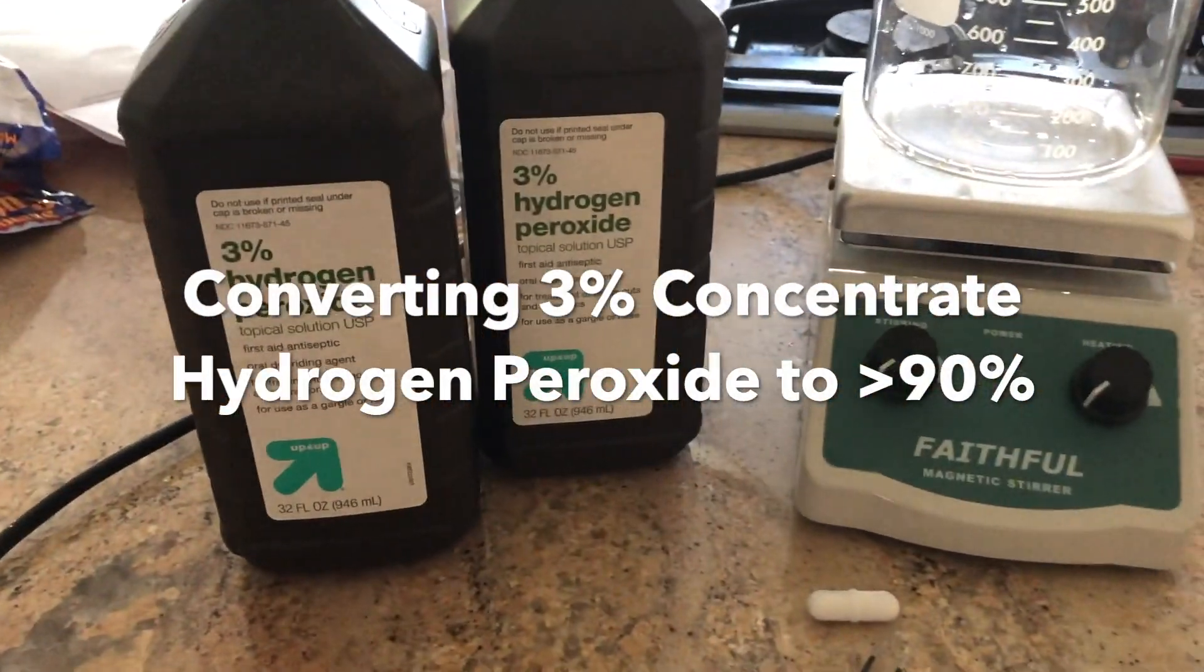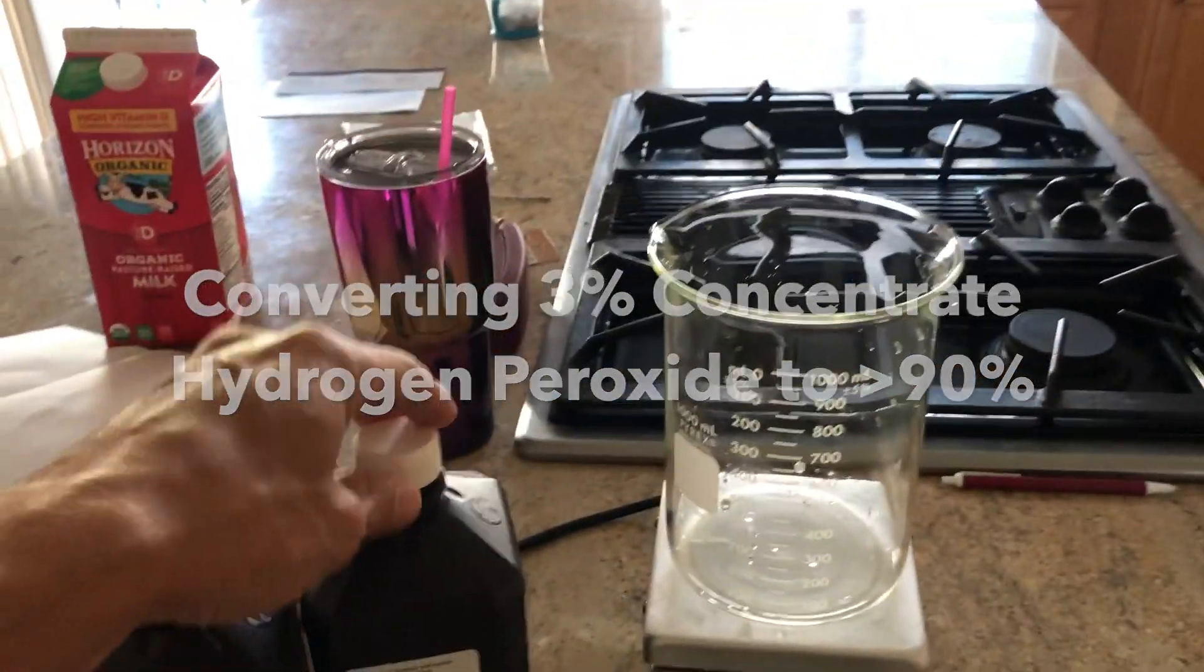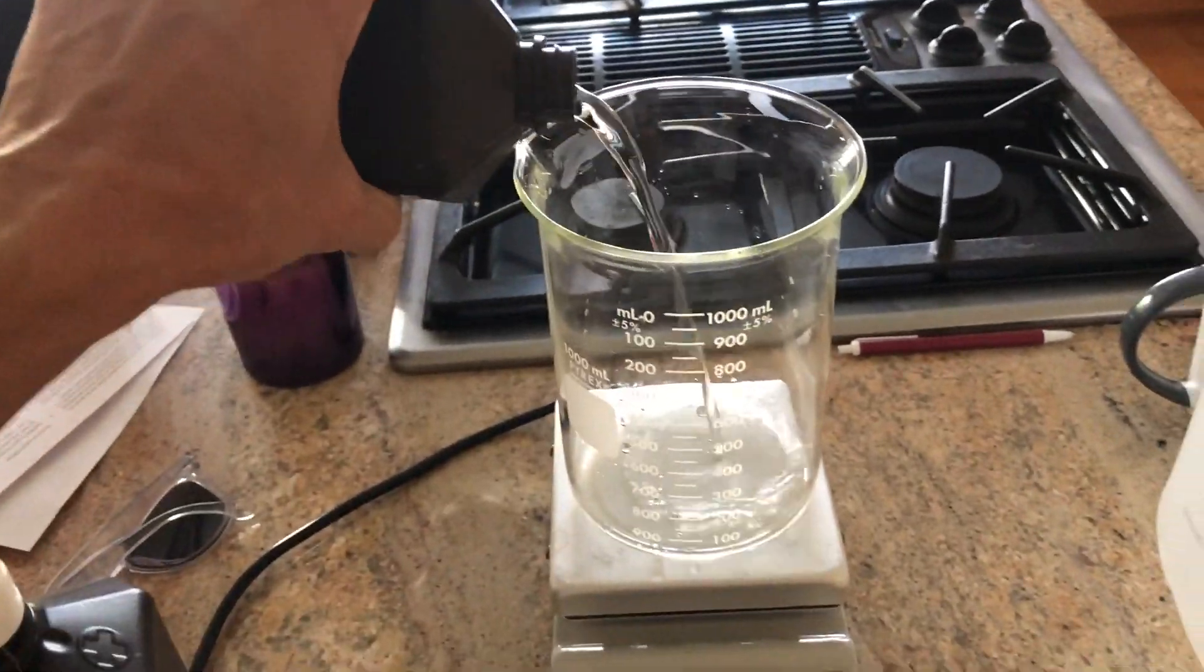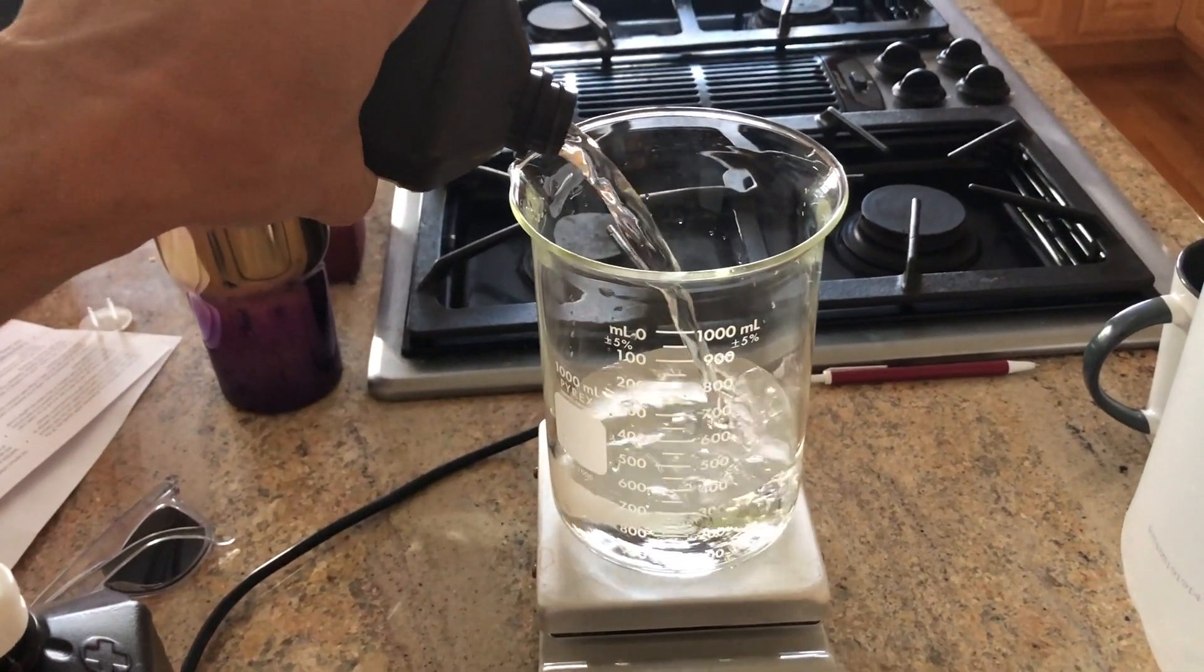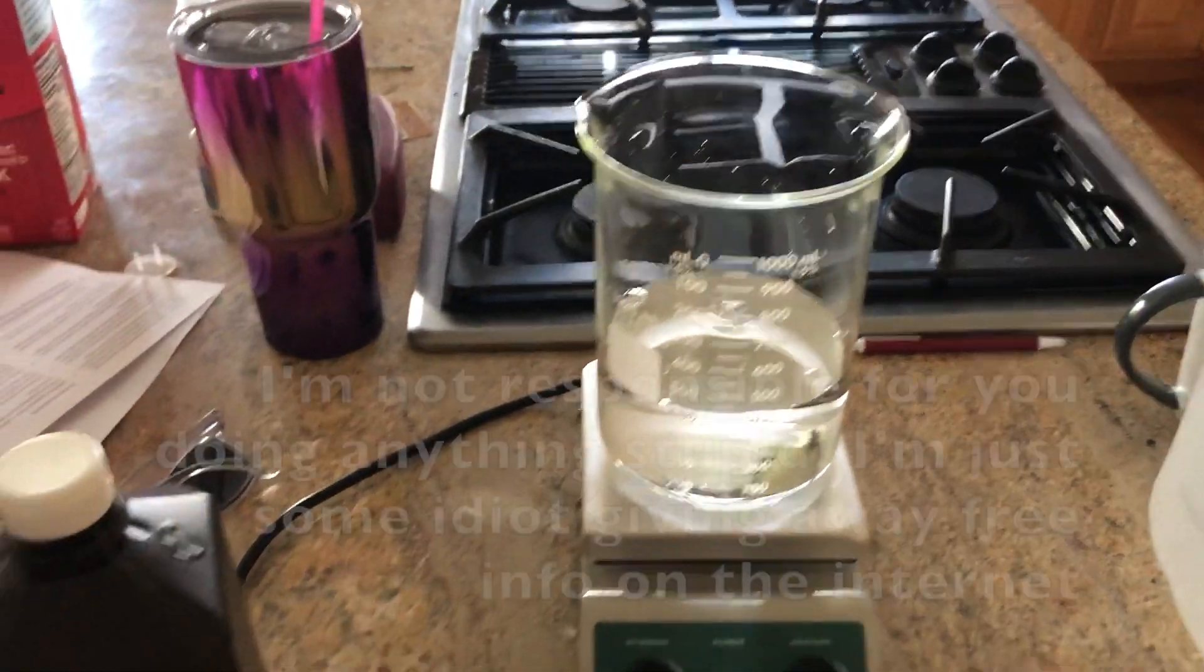We're starting out with just regular 3% hydrogen peroxide. Step one, pretty simple. We're just gonna open air heat it down to about 10% volume. So what I'm gonna do here is put about a liter in here.